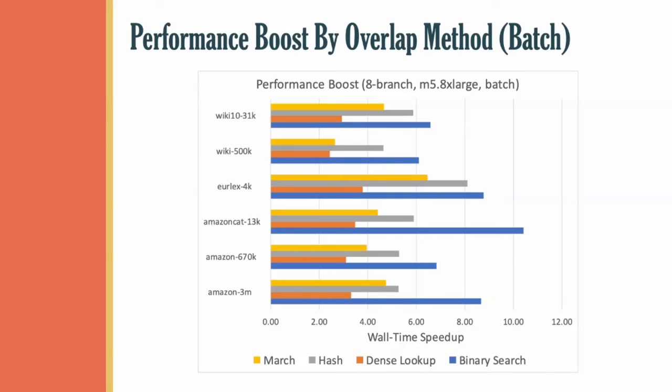We see here that we obtain substantial performance boosts across a wide selection of common data sets, as well as across all overlap methods that I previously mentioned, including marching pointers, hash maps, dense lookups, and binary search.